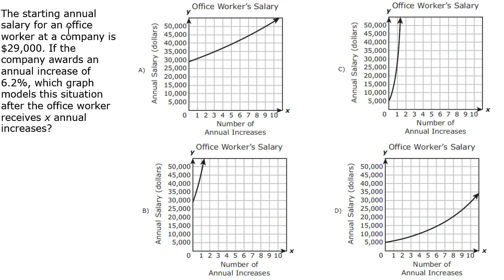The word problem says the starting annual salary for an office worker at a company is $29,000. That's the starting amount. If the company awards an annual increase of 6.2%, which graph models the situation after the office worker receives X annual increases?